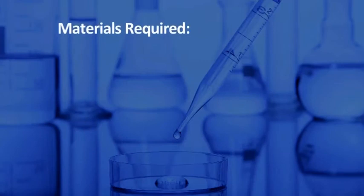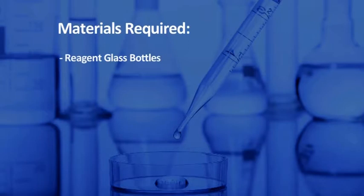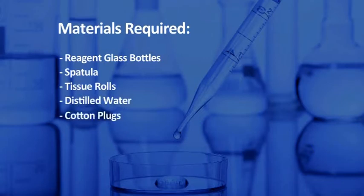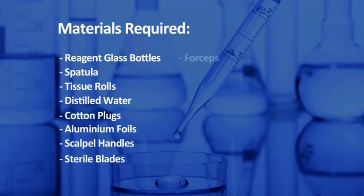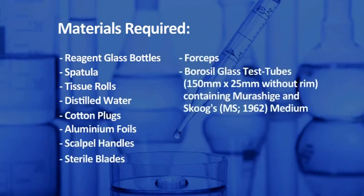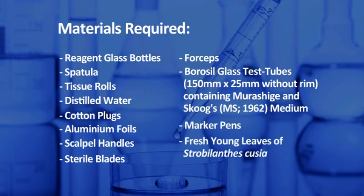Next, let us see the other materials required. It includes reagent glass bottles, spatula, tissue rolls, distilled water, cotton plugs, aluminum foils, scalpel handles, sterile blades, forceps, Borosil glass test tubes of the size 150 mm x 25 mm, preferably without rim, containing Murashige and Skoog MS 1962 medium, marker pens, and fresh young leaves of Shrubalantis coitia.